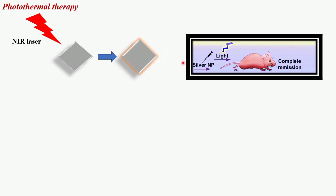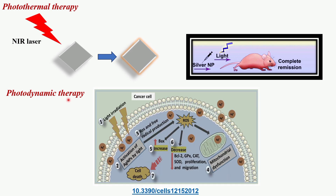Functionalization with biocompatible coatings and targeting ligands enhances selectivity and reduces toxicity. Despite their potential, challenges such as ensuring biocompatibility, effective clearance, and safety must be addressed for clinical translation. In photodynamic therapy, silver nanoparticles enhance the generation of reactive oxygen species when activated by light. Photosensitizers are excited by light to produce ROS, which can selectively destroy cancer cells. Silver nanoparticles can deliver photosensitizers more effectively, and their surface plasmon resonance can be tuned to optimize light absorption. Functionalization with targeting molecules ensures selective accumulation in cancer cells, minimizing damage to healthy tissues.